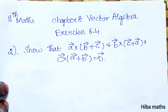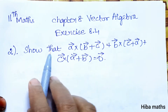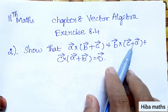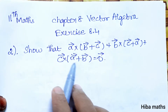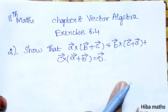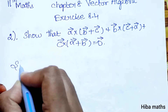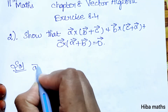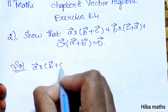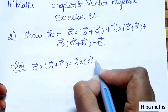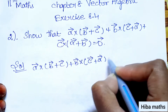Hello students, welcome to Hewa Max 11th standard Math, Chapter 8, Vector Algebra, Exercise 8.4, second question. We need to show that a vector cross (b vector plus c vector) plus b vector cross (c vector plus a vector) plus c vector cross (a vector plus b vector) is equal to zero vector. We will solve and prove it using the solution model.